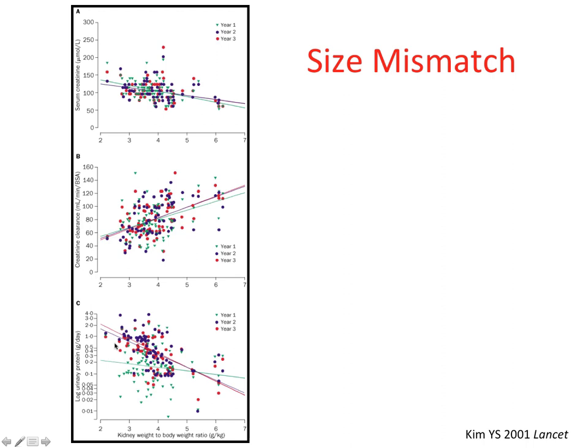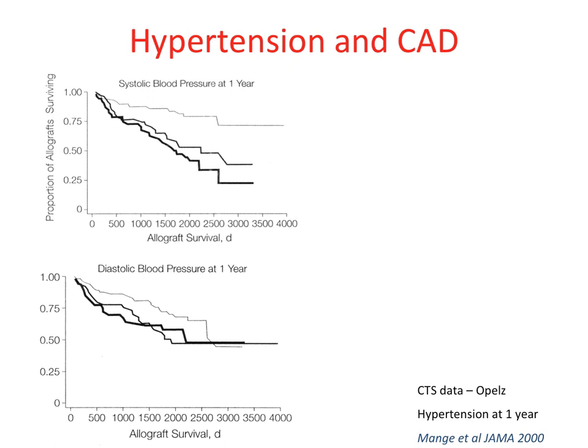Regarding hypertension, this registry analysis from the Collaborative Transplant Study divides patients into tertiles of blood pressure. The better the systolic blood pressure, the better the allograft survival — the separation is less convincing for diastolic blood pressure. It's important to note there aren't many intervention studies on blood pressure control in transplant patients, so causation cannot be established.